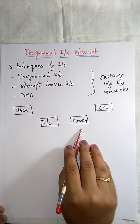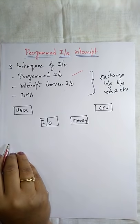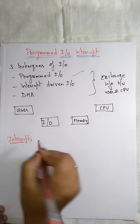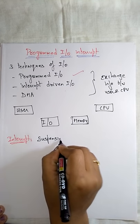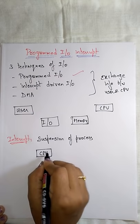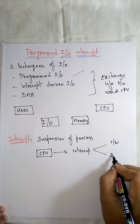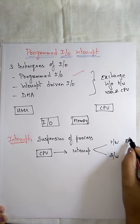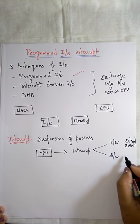The I/O devices may be a mouse, monitor, or keyboard, and the memory may be internal or external memories. Coming to the first technique, Programmed I/O Interrupt — what is this interrupt? An interrupt is nothing but a suspension of process. Suppose the CPU is executing some instruction and suddenly an interrupt occurs. That interrupt may be a hardware interrupt, caused by some external event, or a software interrupt, caused by some special instruction.